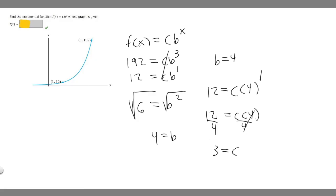Now that we have all this, we can just plug in and that'll be it. We know that f(x) = c, which is 3, times our b, which is 4, raised to the x.